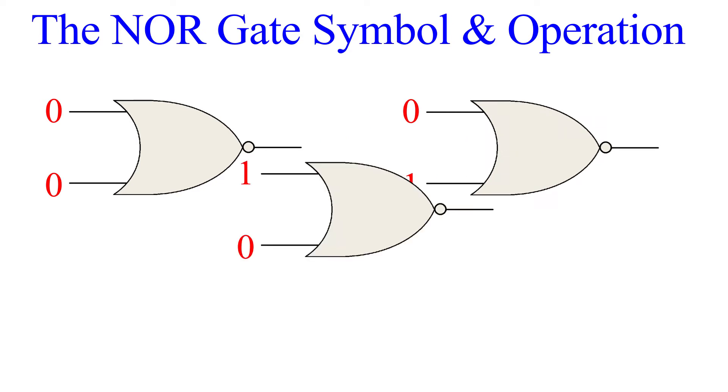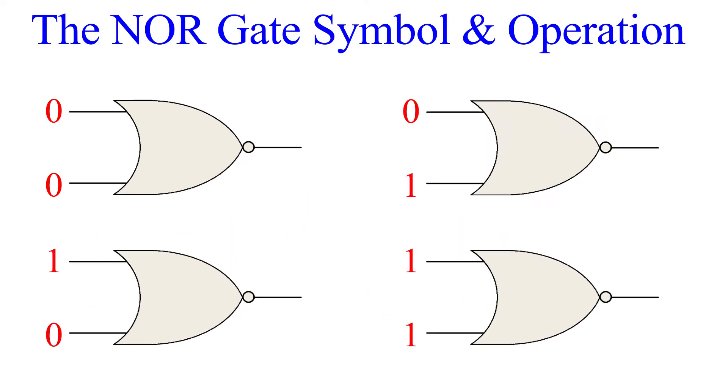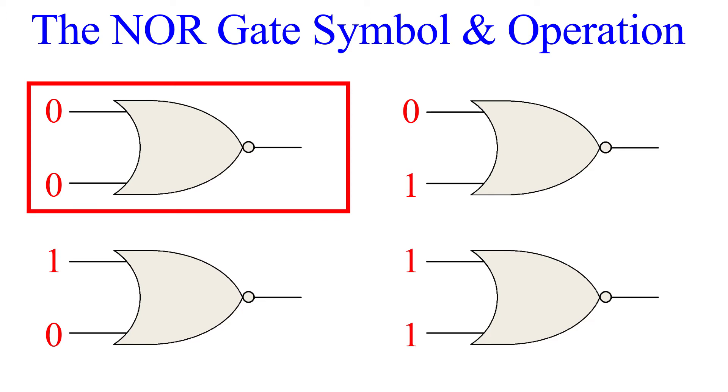Let's look at these combinations. As always, we have 0-0, then 0-1, next 1-0, and finally 1-1. The first gate has inputs zero and zero. On a regular OR gate, this would produce an output of zero. This gate inverts that, so the output is one.